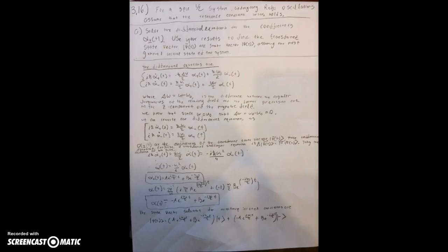For my standard 3.2, I chose to do problem 3.16, which asks us for a spin one-half system undergoing Rabi oscillations, assuming that the resonance condition omega equals omega naught holds.